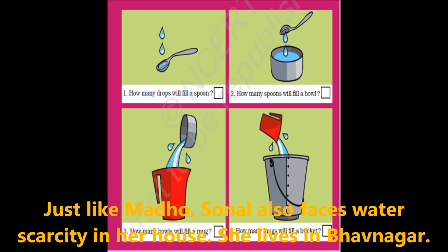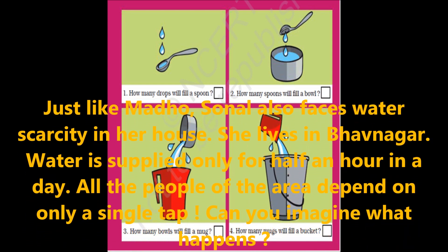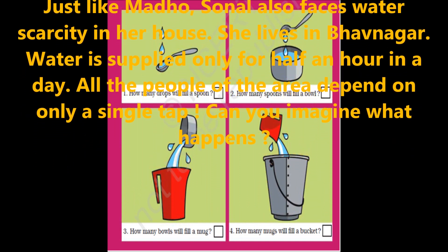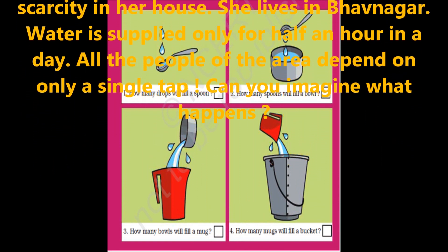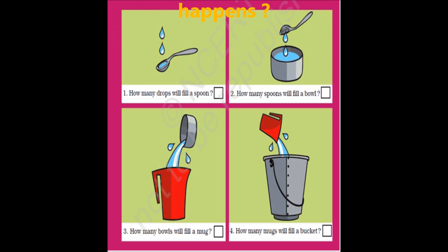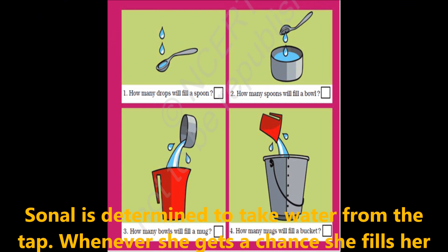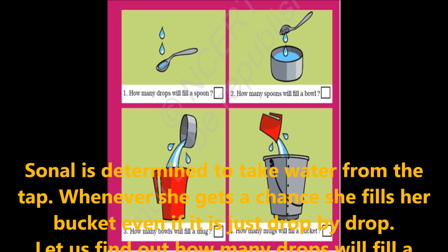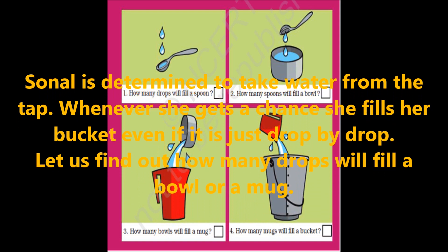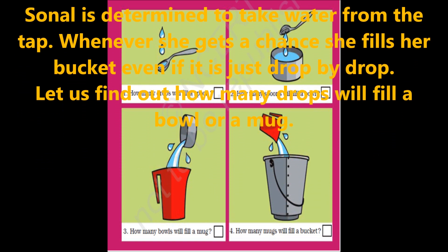Just like Madhu, Sonal also faces water scarcity in her house. She lives in Bhuvanagar where water is supplied for only half an hour a day. All the people of the area depend on a single tap. Sonal is determined to take water from the tap. Whenever she gets a chance she will fill her bucket, even if it is just drop by drop. Let us find out how many drops will fill a bowl or a mug.